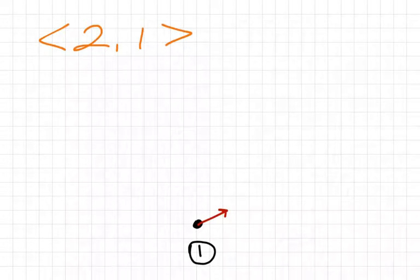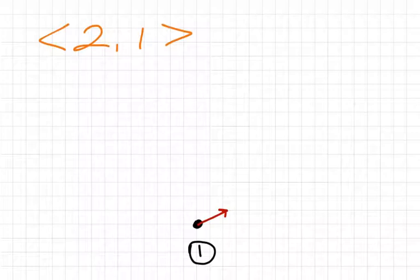Hopefully at this point, graphing a vector like that is no big deal. We're going to learn how to transform our vector. Transformations are things like translations, reflections, rotations, and so on. We're going to learn how to do this using matrix multiplication, combining our knowledge of matrices with vectors.